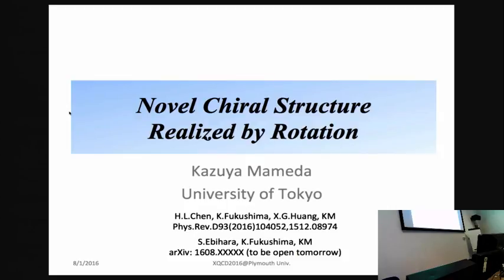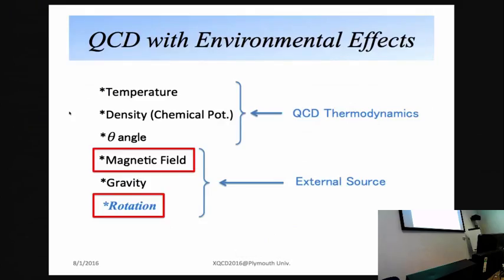I have uploaded this paper this morning, so you can read it. First of all, we know many examples where QCD is affected by environmental effects — for example, temperature, density, which are conceptually important quantities in QCD dynamics. We can also consider the finite theta angle, QCD with finite density, magnetic field, and gravitational field as external sources.